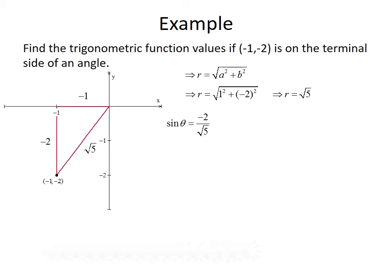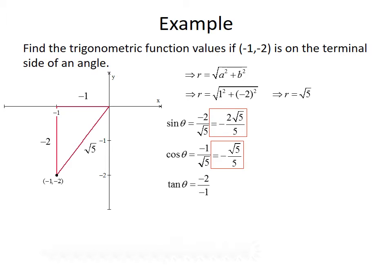Now that we know all three sides, we can find the trig function values. Sine is opposite over hypotenuse: -2 over √5. Rationalizing gives -2√5 over 5. Cosine is adjacent over hypotenuse: -1 over √5. Rationalizing gives -√5 over 5. Tangent is opposite over adjacent: -2 divided by -1, which gives positive 2.